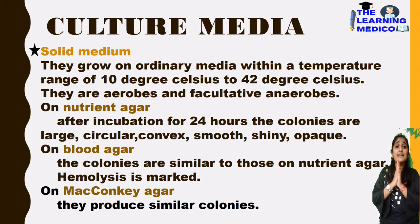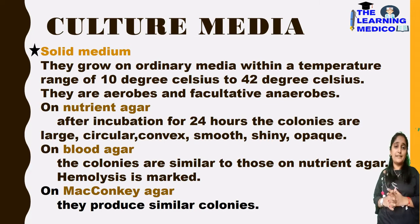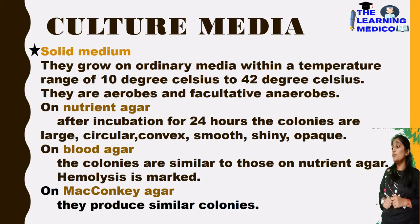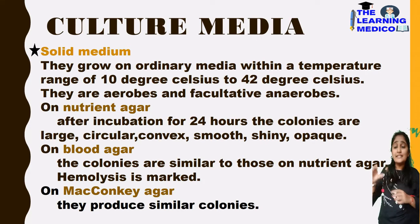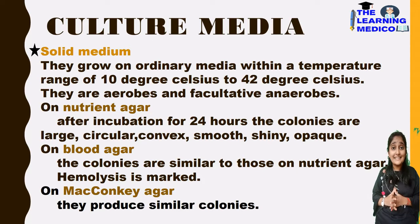Culture media: I have made a separate video covering all culture media in detail. It grows in ordinary media at ordinary temperatures ranging from 10°C to 42°C. Being aerobic and facultative anaerobic, in solid media it grows on nutrient agar, blood agar, and MacConkey agar. On nutrient agar, colonies form in 24 hours and are large, circular, convex, smooth, shiny, and opaque.